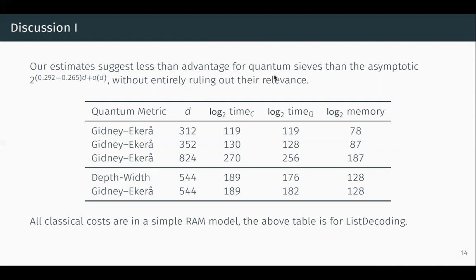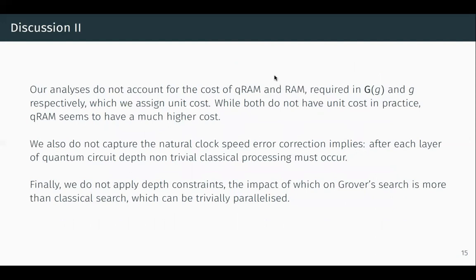Depending on what you're willing to constrain, you get much more or much less quantum advantage. We stress that what we give in this work are ultimately estimates — we have made some approximations, appealed to some heuristics, and set some costs to zero. The costs set to zero tend to be costs that would be exactly the same in both quantum and classical versions of these algorithms, so including them would only reduce the range of dimensions for which there is a quantum advantage. The quantum advantage could grow, shrink, or disappear altogether. There are three reasons we think a more complete analysis would cause quantum advantage to shrink further. We don't capture the relative costs of QRAM versus RAM — all roads point towards QRAM having a far higher cost than RAM, and assigning both unit cost likely inflates the quantum advantage.